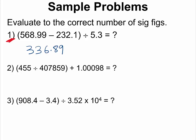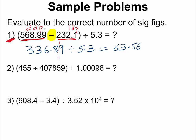Remember, the mathematical operation that gave us that answer is a subtraction. The rule for subtraction is that we are limited by the measurement with the least decimal places. This measurement has one decimal place, and this measurement has two decimal places, so normally this should have only one decimal place. But we are not going to round because we have more calculations to do. So if you divide by 5.3, your calculator should give you 63.56415094.